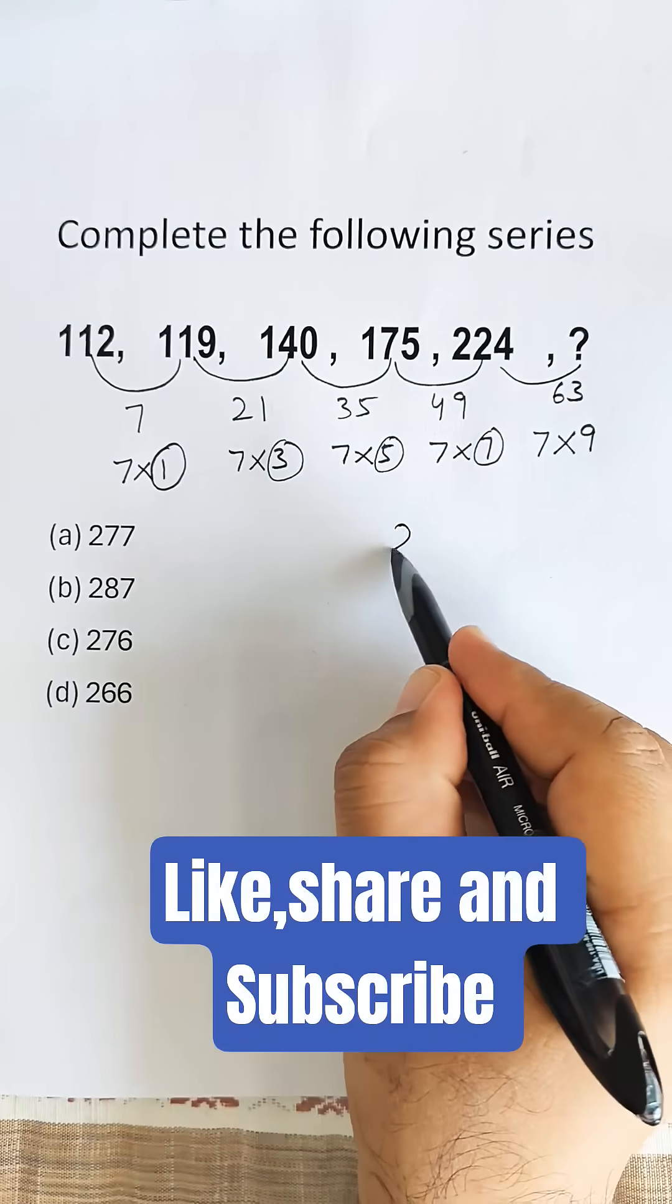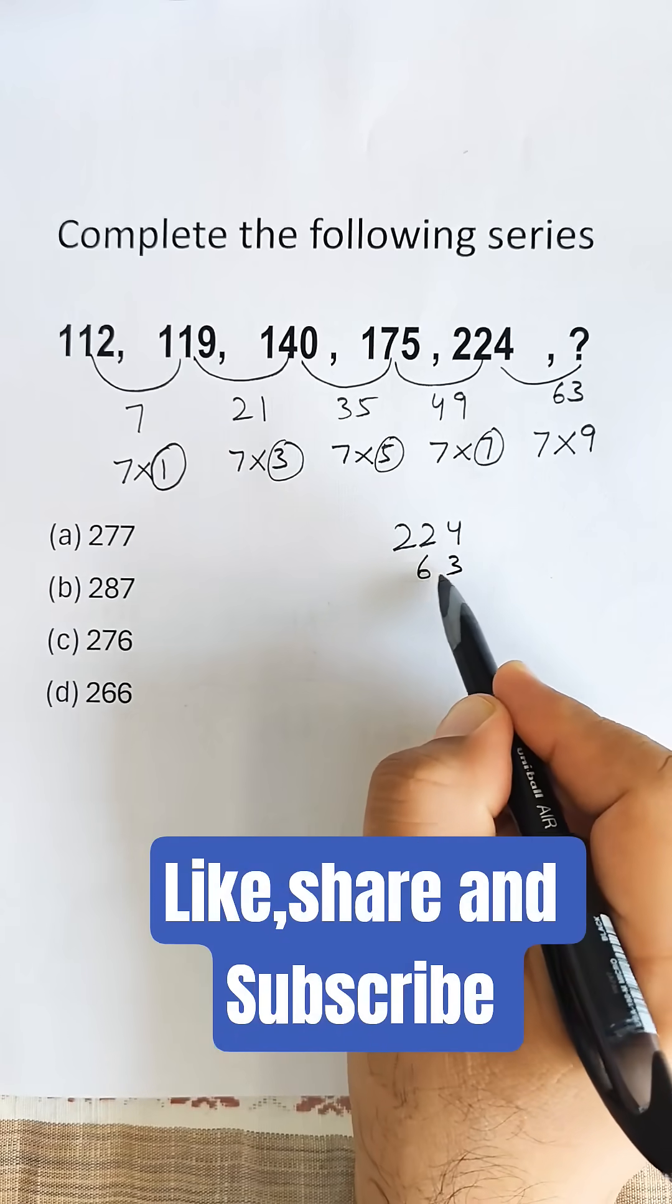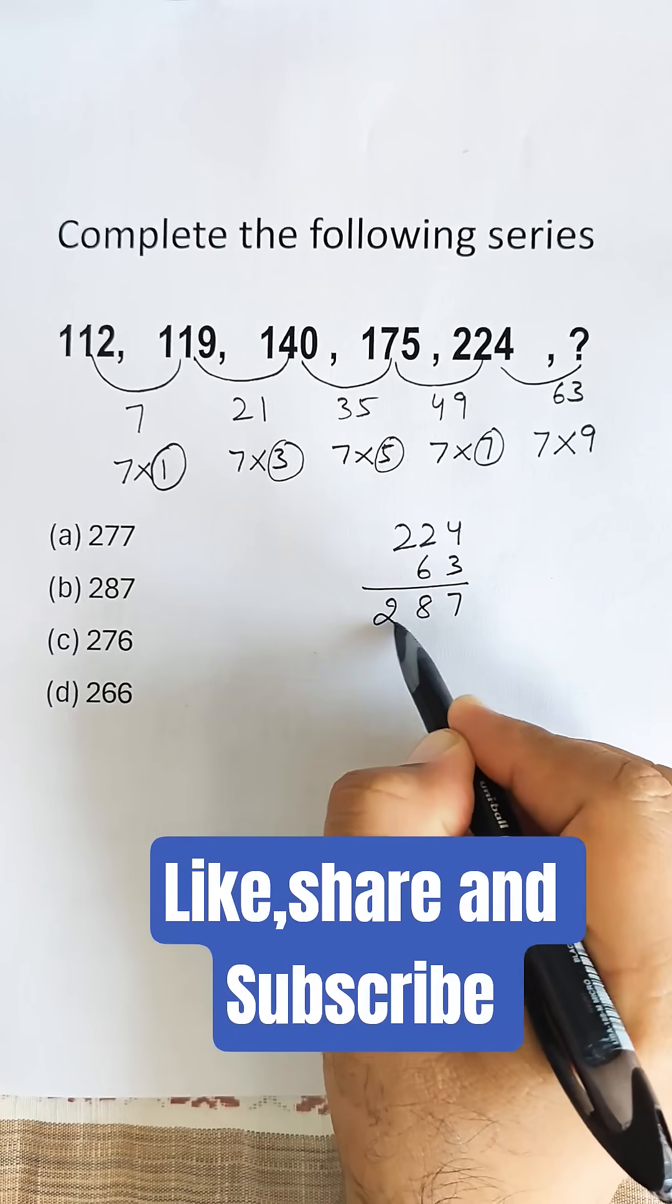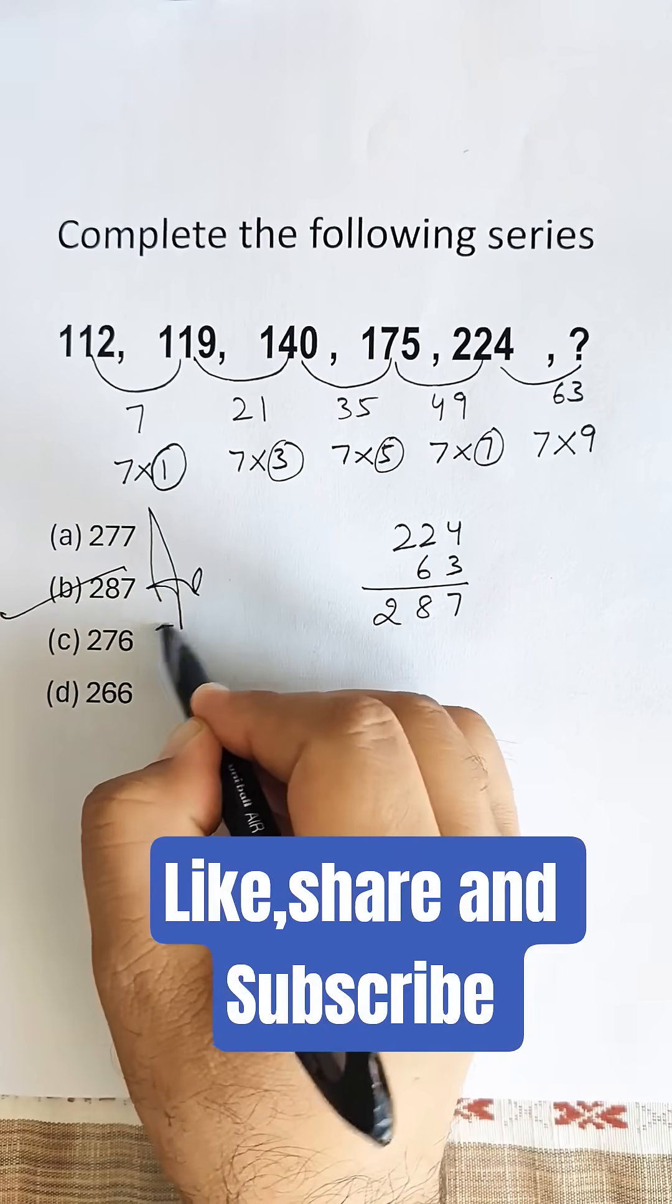So the missing number will be 224 plus 63, which equals 287. Option B is the correct answer.